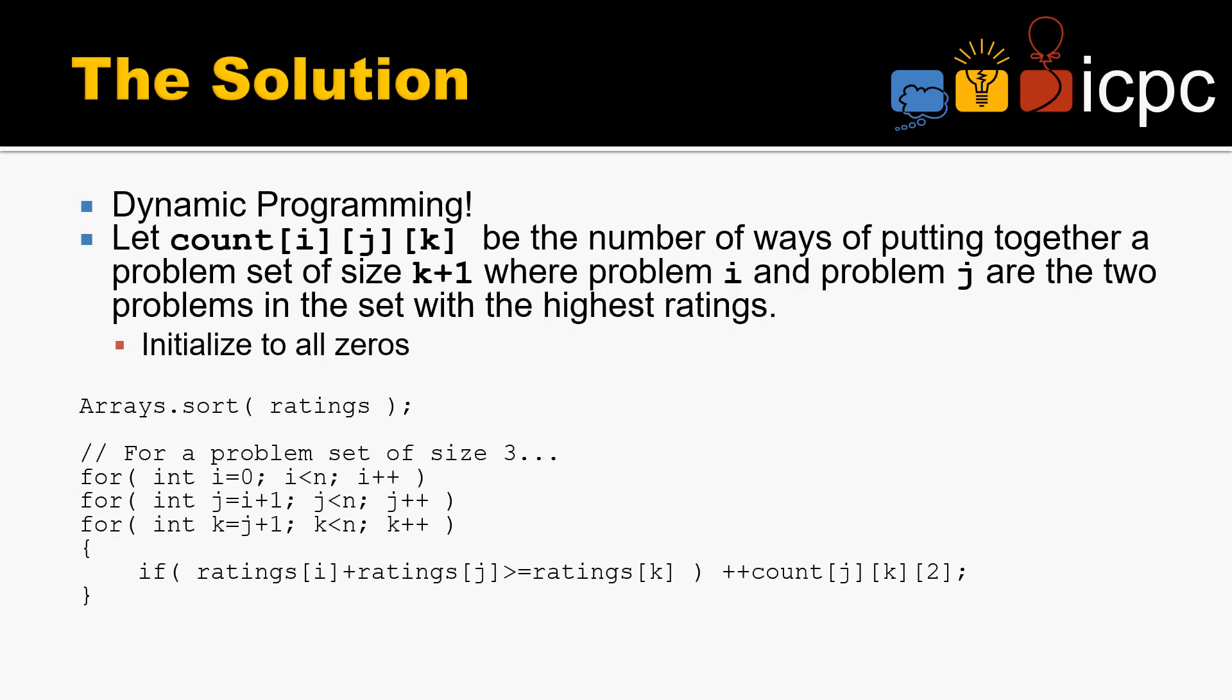So the solution here is dynamic programming. We're going to let count[i][j][k] be the number of ways of putting together a problem set of size k+1, because number 0 is going to be a problem set of size 1. So problem set of size k+1, where problem i and problem j are the two problems in the set with the highest ratings. We're going to initialize that to all zeros.